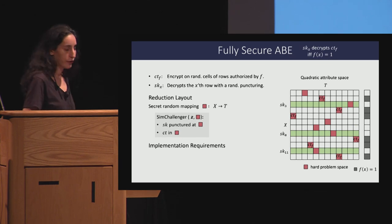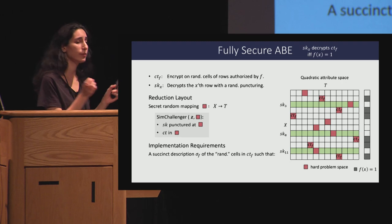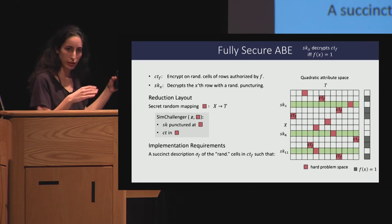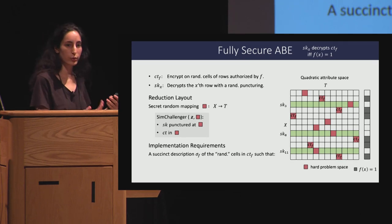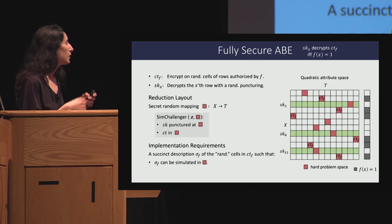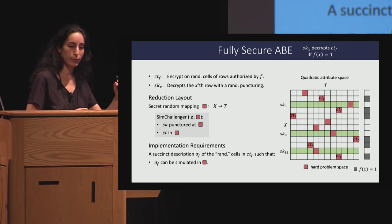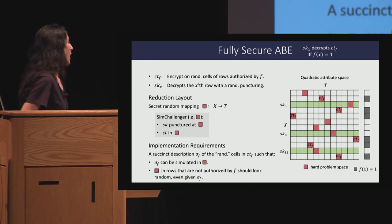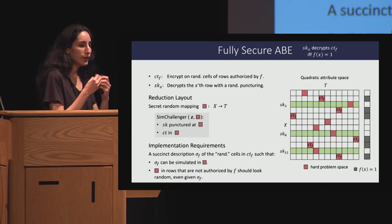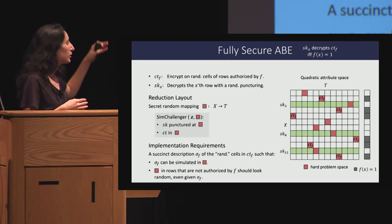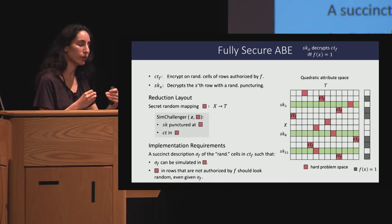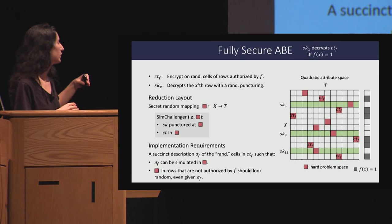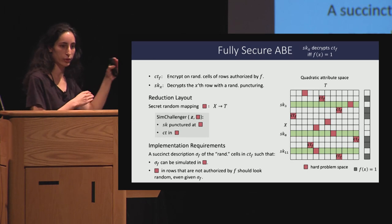We need a succinct description of the random columns associated with the ciphertext. For the security argument, this succinct description must satisfy two properties: first, we should be able to simulate it in the security proof so it always uses the predetermined cells; second, the description should not reveal more information about the pink cells than necessary — in particular, it shouldn't reveal the values of pink cells on rows not authorized by F, so secret keys remain indistinguishable from real ones.